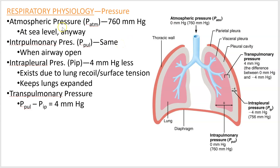There are four pressures to consider. Atmospheric pressure, which we'll say at sea level is 760 millimeters of mercury — sometimes put in atmospheres or other measurements, but we'll say 760 mmHg. Then intrapulmonary pressure, intrapleural pressure, and transpulmonary pressure. You'll see symbols here: pressure of the atmosphere, pressure pulmonary, and pressure intrapleural.